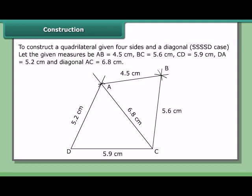To construct a quadrilateral given four sides and a diagonal — the SSSSD case. Let the given measures be AB = 4.5 cm, BC = 5.6 cm, CD = 5.9 cm, DA = 5.2 cm, and diagonal AC = 6.8 cm.